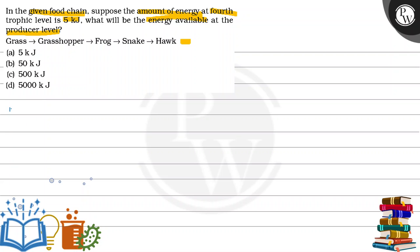Now the key concept in the question is that we need to know that whenever there is energy transfer from one trophic level to another trophic level, they all follow the rule of 10% energy flow.